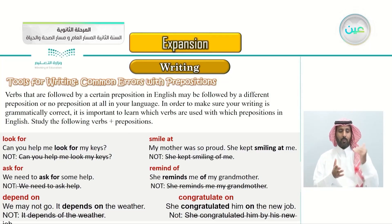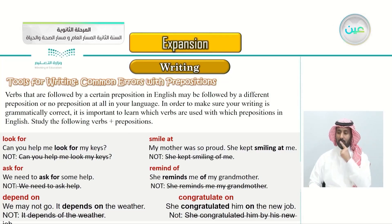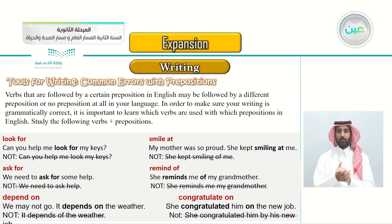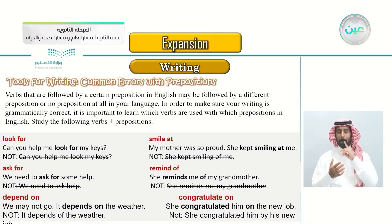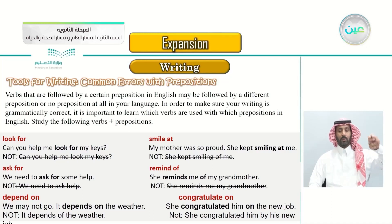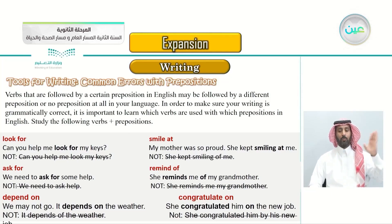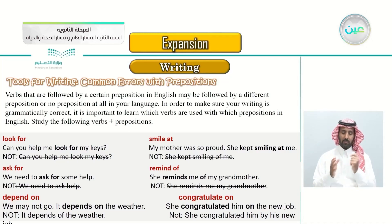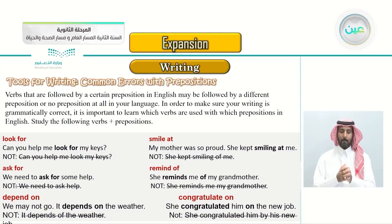Next: 'ask for' - we need to ask for some help. When you want some help, you say 'I'm asking for some help,' not 'asking at,' 'asking in,' or just 'asking.' The incorrect sentence is 'we need to ask help.' Always use 'ask for' - this is the preposition that comes with the verb 'ask.'